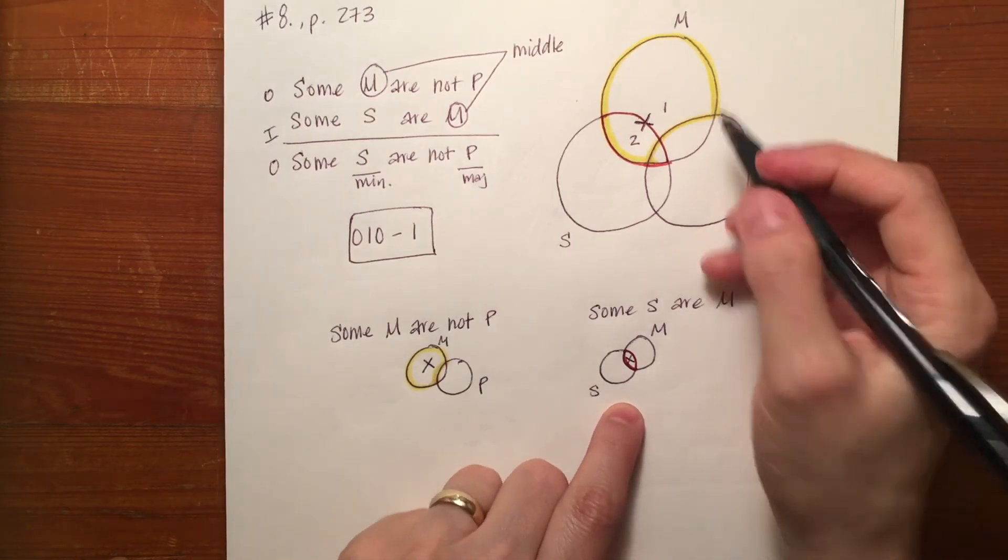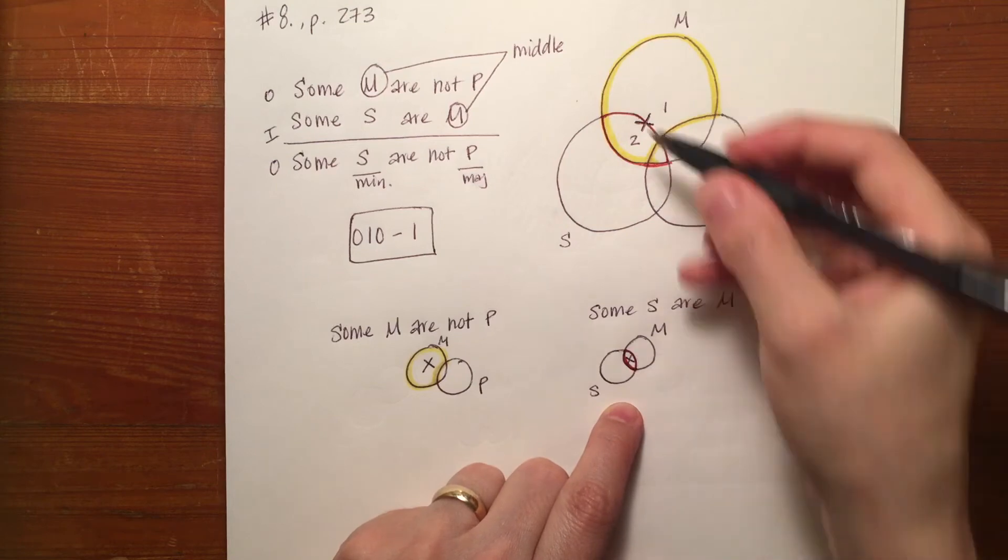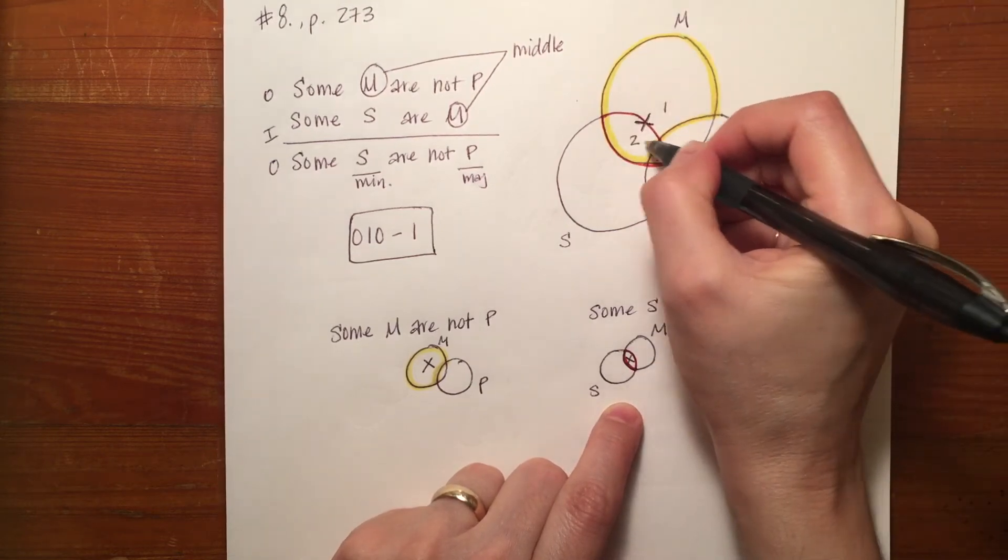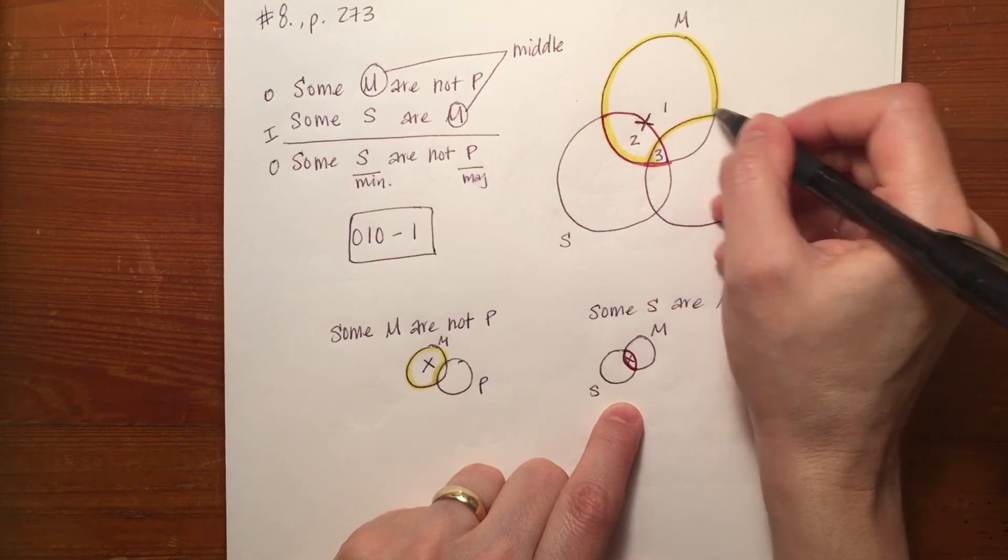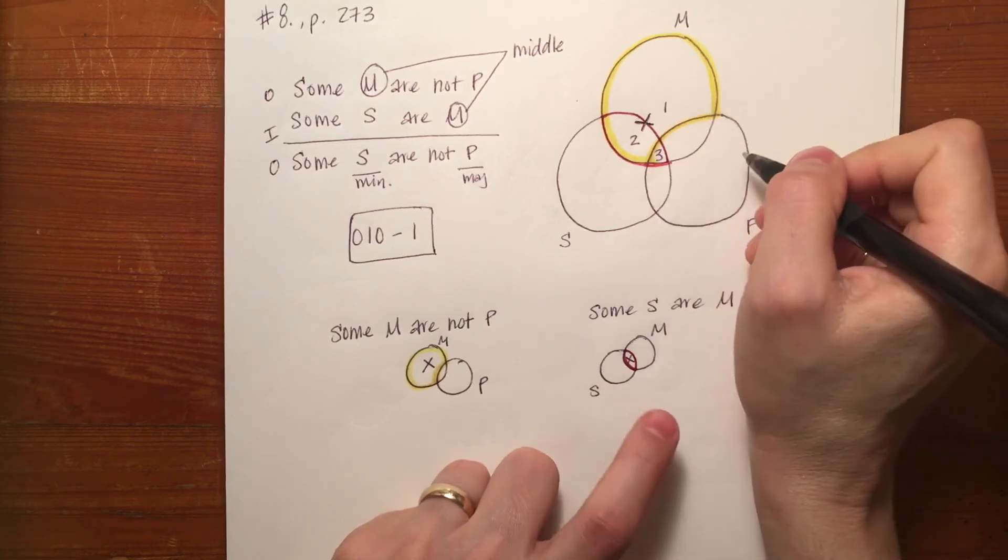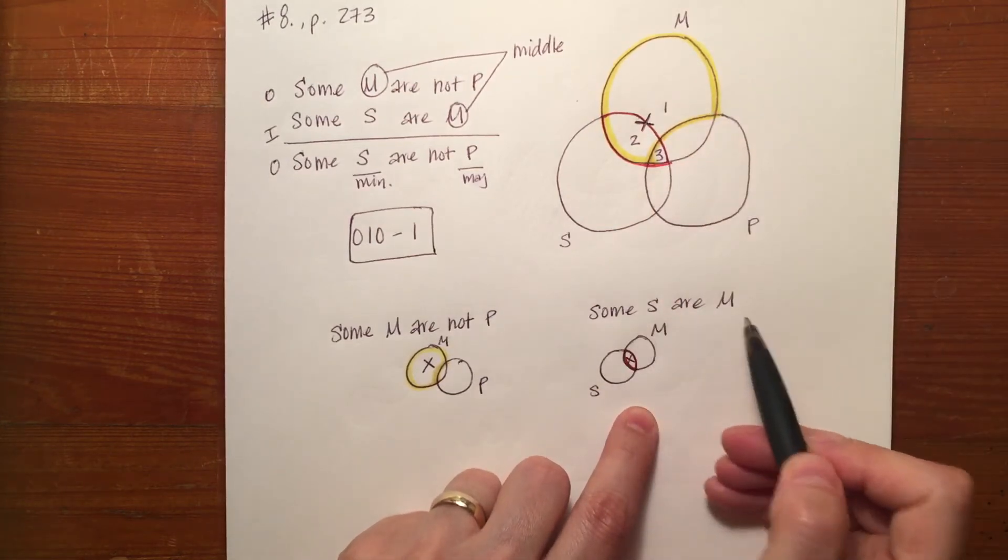The same thing here. I know that this red area is divided into parts two and three by this other P circle that we're not working with when we're looking at the second premise.